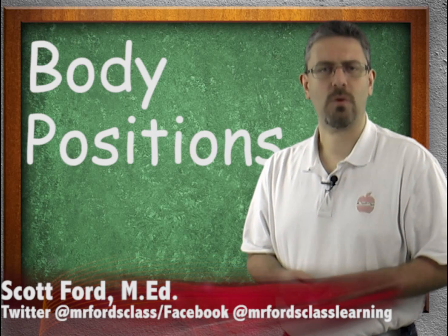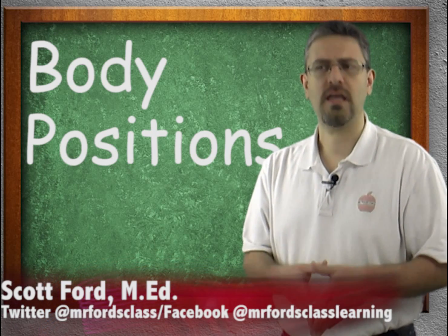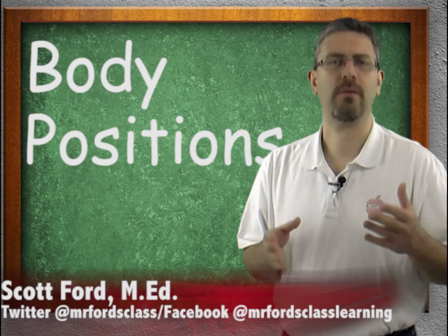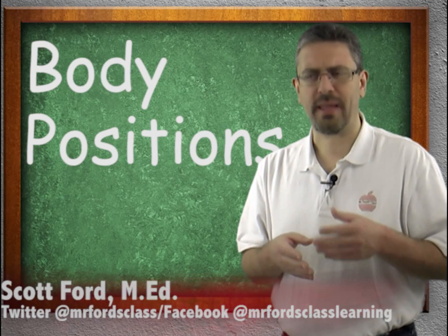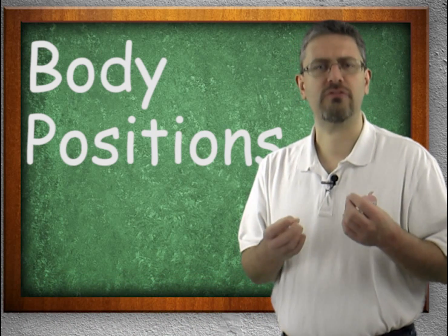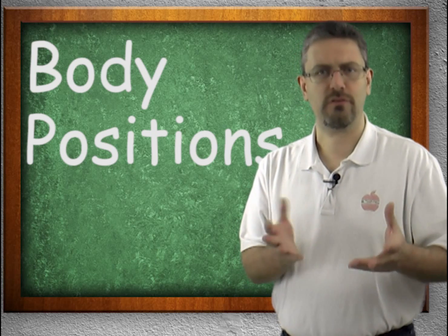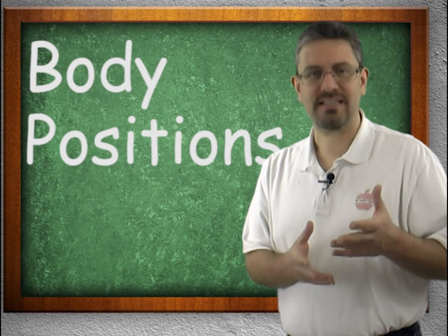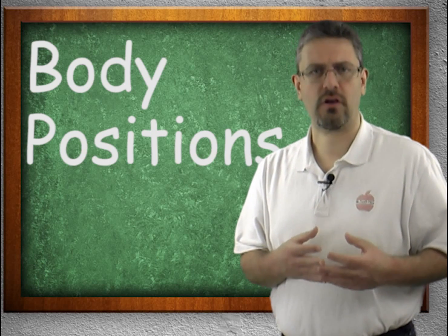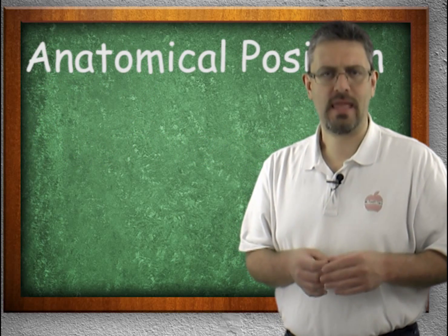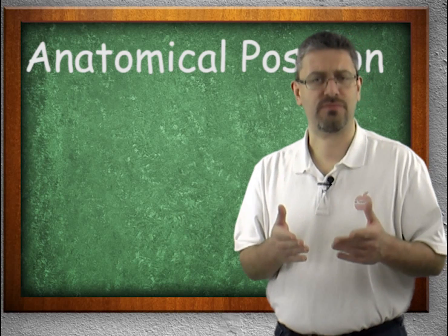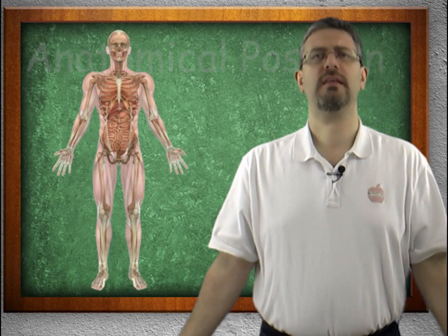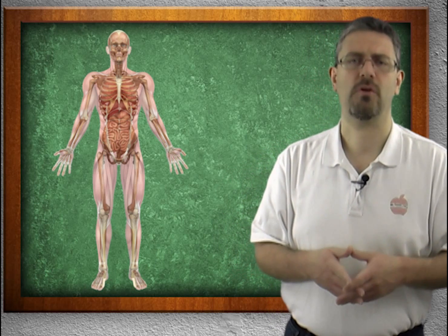When dealing with the human body, we have to establish a specific position for the body. We have to assume that the body is in a certain space in the universe. This orientation is called anatomical position. The person is standing straight, facing forward, palms facing forward down by their side, feet flat on the floor. This is anatomical position.